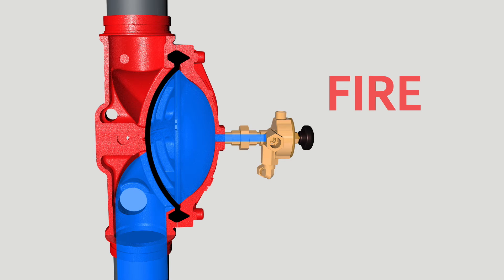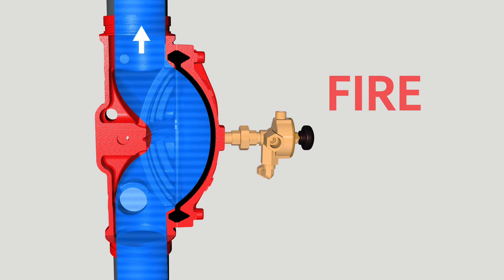When a fire is detected, the system opens the deluge valve, allowing water to travel to open nozzles to suppress the fire.